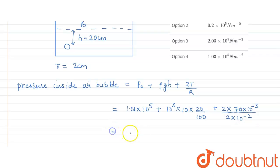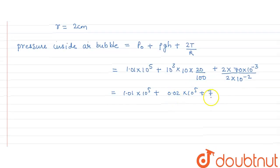So on solving we get 1.01 times 10 to the power 5 plus 0.02 times 10 to the power 5 plus 7. In comparison to this, the 7 is very negligible value so we will neglect the value.